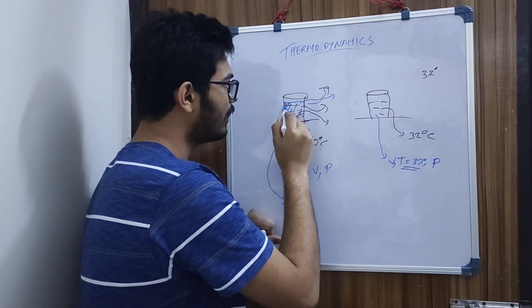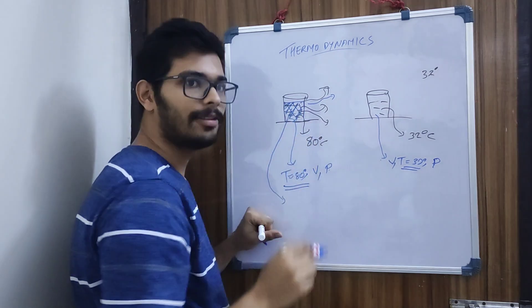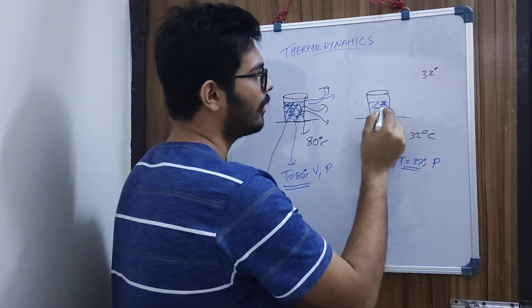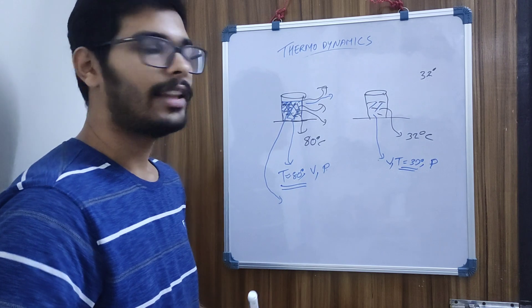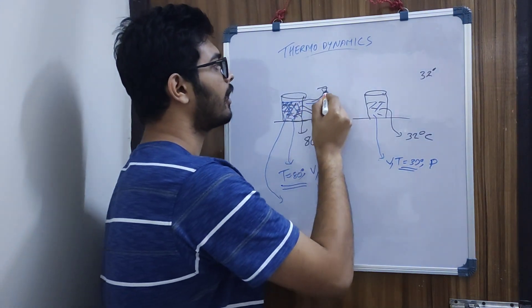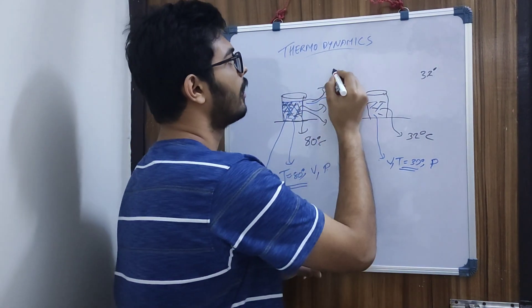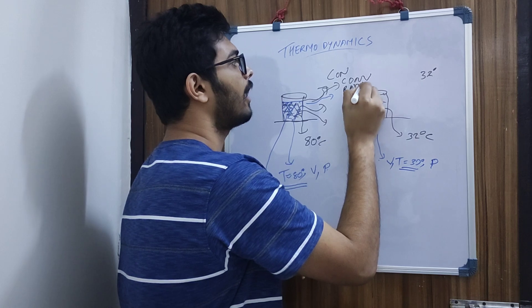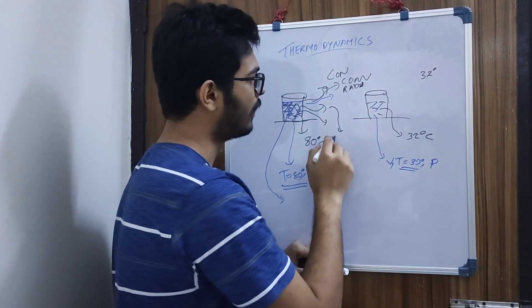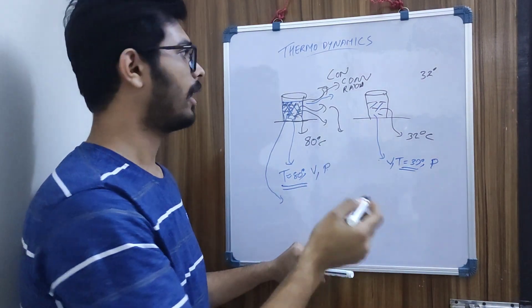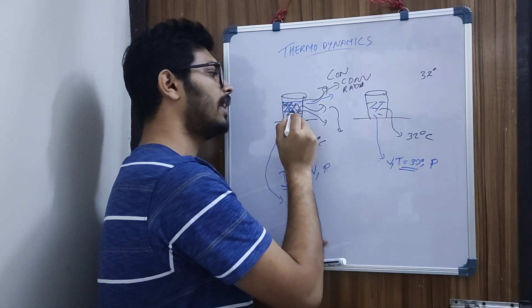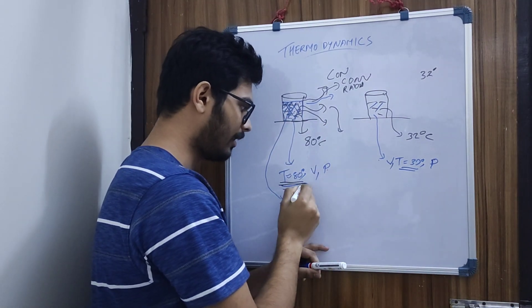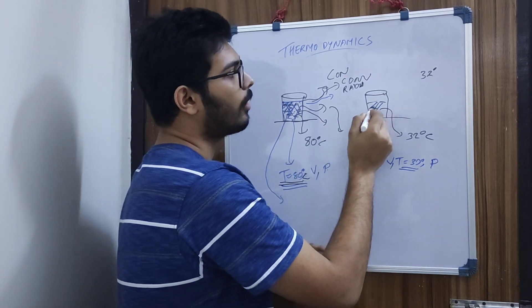This system is in the initial state. How do we get the heat transfer? Conduction, radiation — how do we get the heat? Our system is in one state, one condition. The temperature is 80 degrees. That is the final condition.